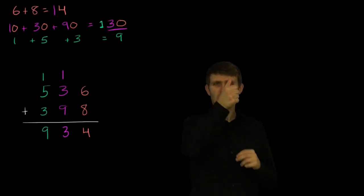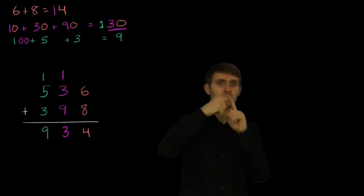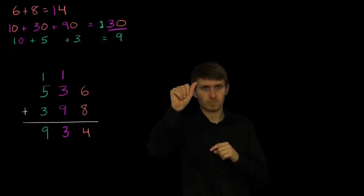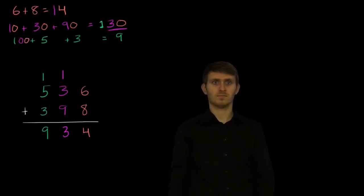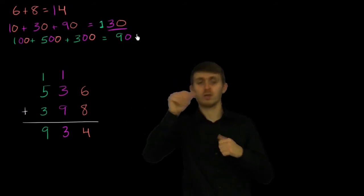So this is actually 100. I want to make all the colors the same. So this is actually 100 plus 500, plus 300, plus 300. Let me get the color coding right. Plus 300 is equal to 900, is equal to 900.